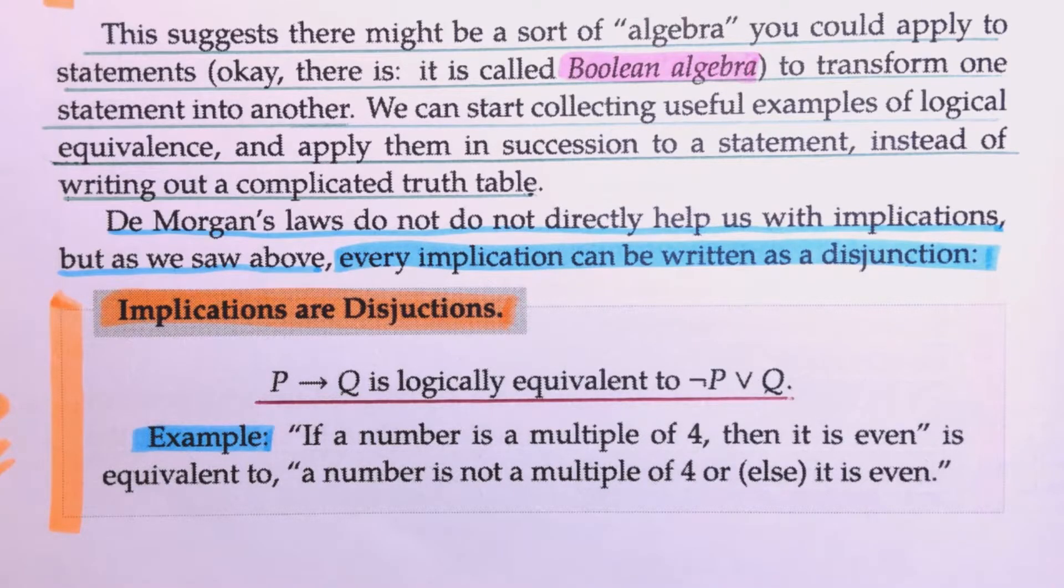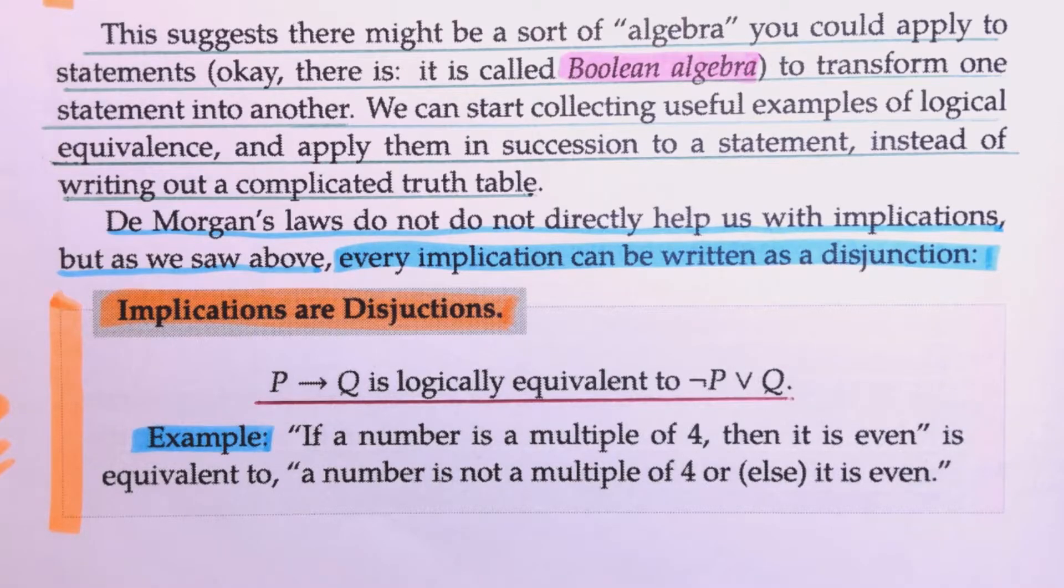Now, DeMorgan's Laws do not directly help us with implications. But as we saw above, every implication can be written as a disjunction. Very important statement, implications are disjunctions. If P, then Q is logically equivalent to NOT P or Q. And the example he gives us here is, if a number is a multiple of 4, then it is even. Is equivalent to a number is NOT a multiple of 4, or else it is even.